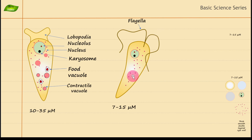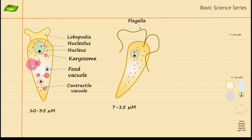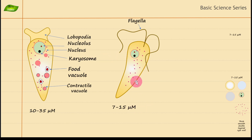A distinct feature of the flagellate form is that it changes locomotion from pseudopod-based movement to flagella-based movement — it has a rapid darting motion using two flagella. This stage is temporary and occurs when the trophozoite is exposed to a nutrient-deprived environment. The trophozoite converts into this more rapidly moving form to find a new source of nutrition. This stage is not replicative; it is mainly for survival and dispersal.